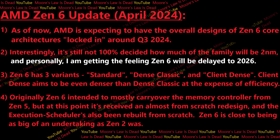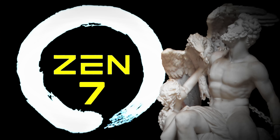Originally Zen 6 intended to mostly carry over the memory controller from Zen 5, but at this point I'm being told it's received an almost from-scratch redesign. The execution scheduler has also been rebuilt from scratch — that wasn't initially planned. Zen 6 is close to being as big an undertaking as Zen 2 was, or maybe even bigger, because Zen 5 had a lot of issues and a lot of things needed to be fixed. Zen 6 still has the new chiplet layout that drives really low latency and packages chiplets differently than before — but now they've redesigned entire parts of the architecture, so it should be just as big a deal as Zen 5.